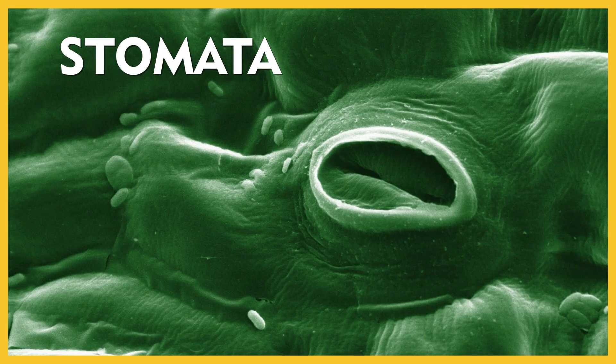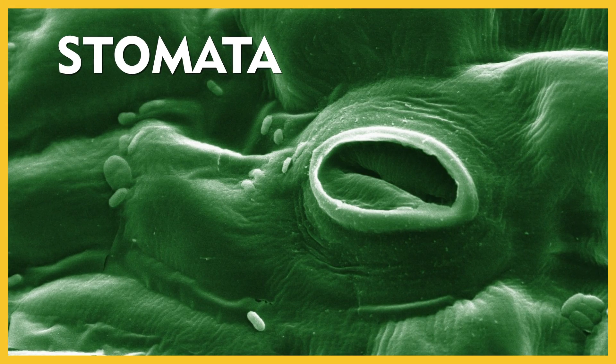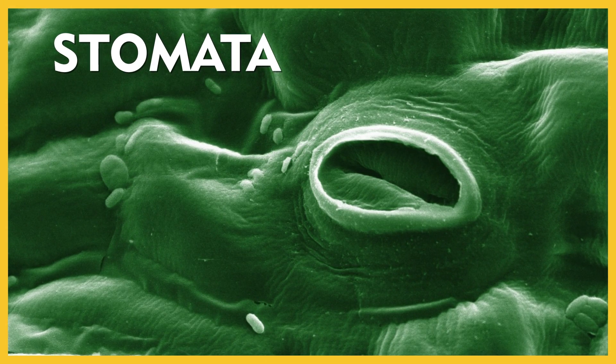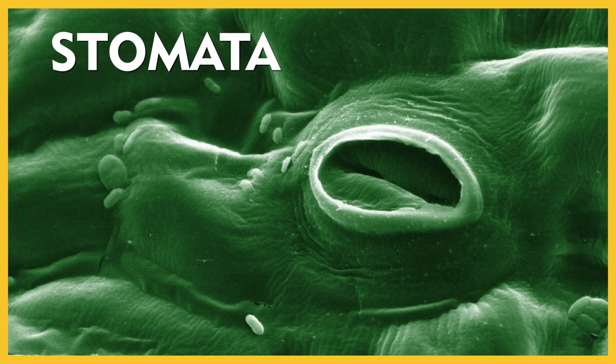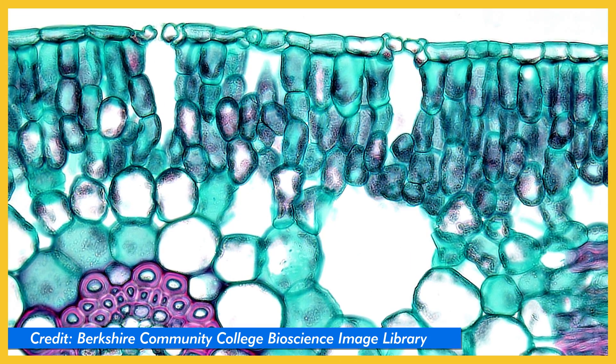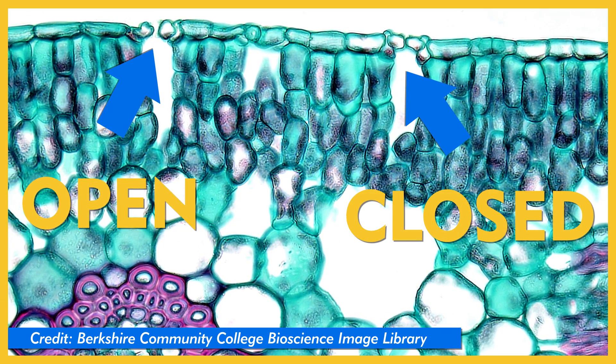Not only did they figure out waterproofing, but plants ended up with another special adaptation on their outer layer. Most plants have special pores called stomata. These openings allow the plant to exchange things like oxygen and carbon dioxide with the air. But water can evaporate from stomata, and that can lead to dehydration. Stomata have special mechanisms that allow them to actually close when it's hot outside. Nice one, plants.